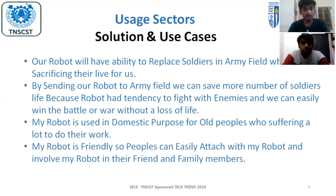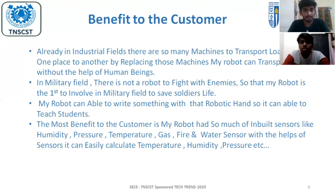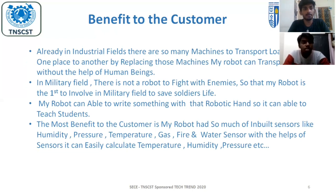Our robot is used for domestic purposes for elderly people who are struggling to do their work. Our robot is also used to transport loads from one place to another, replacing heavy machines. The robot can transport loads without the help of human beings. In the military field, there is currently no robot to fight with enemies, so our robot would be the first to be involved in the military field to save soldiers' lives.